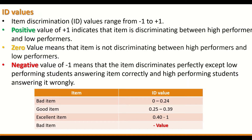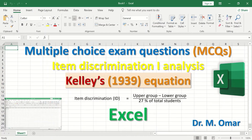If the ID value is negative, then the item is considered very bad and it is recommended to remove and exclude it from the exam. The goal is to use Kelly's equation in item discrimination analysis to evaluate multiple choice exam questions in Excel, identifying questions that are good at discriminating high performing students from low performing students, and classifying each question as either good or bad.